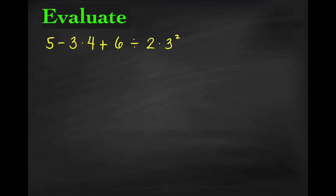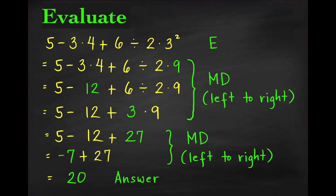Next problem. We want to evaluate 5 minus 3 times 4 plus 6 divided by 2 times 3 squared. Applying PEMDAS, the answer is 20. First, apply exponent: 3 squared is 9. Then multiplication and division from left to right: 3 times 4 is 12, then 6 divided by 2 is 3, then 3 times 9 is 27. Finally, subtraction and addition from left to right: 5 minus 12 is negative 7, plus 27 equals 20.